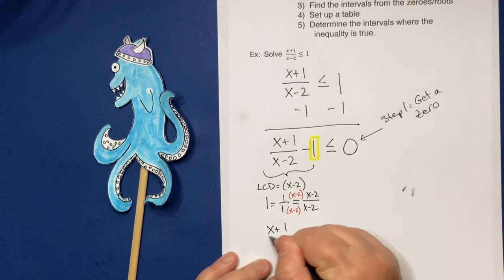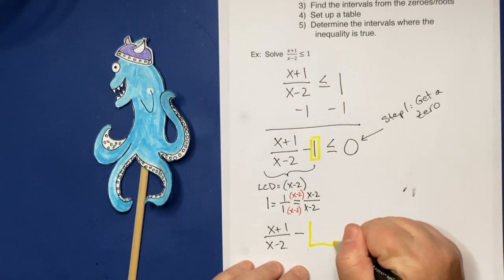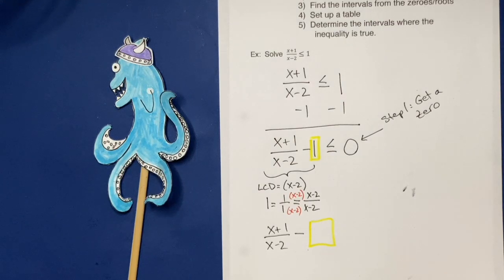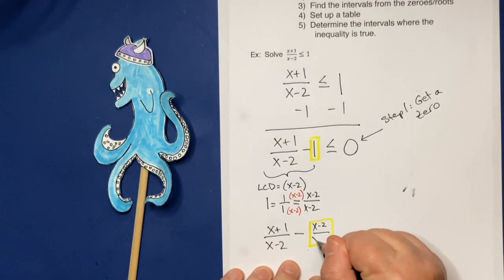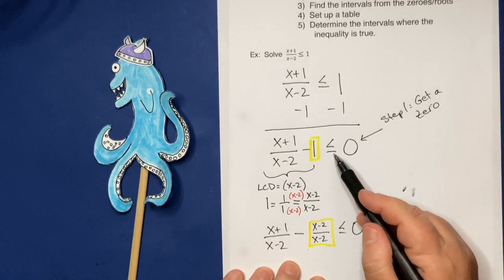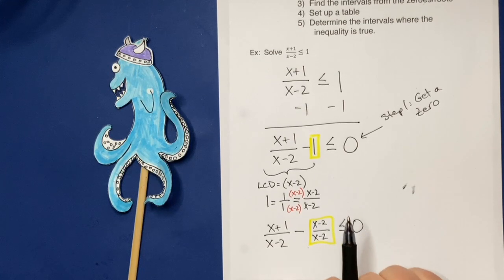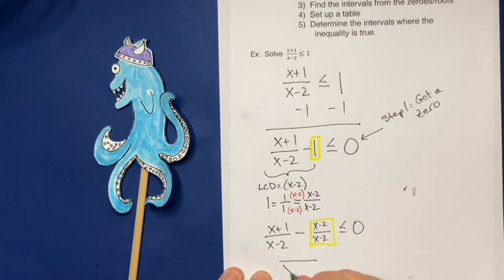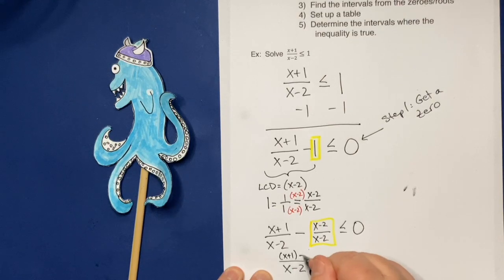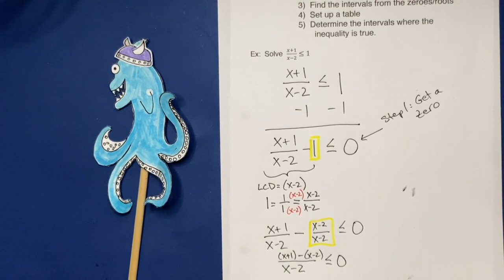So x plus 1 all over x minus 2 minus, and instead of the 1, we're going to put in our new thing, our new one, which is x minus 2 all over x minus 2. Now we haven't done anything that would change the inequality, so we leave that there. And then we do this subtraction, the denominators match. So I get all over x minus 2, I get x plus 1 minus x minus 2. And again, we haven't done anything that would change the inequality.